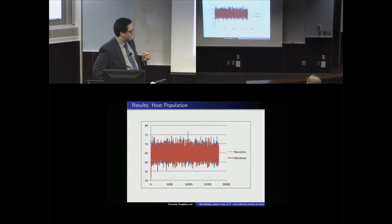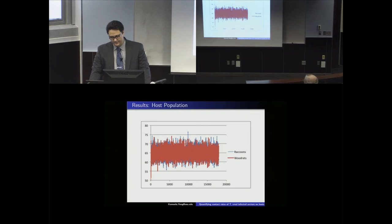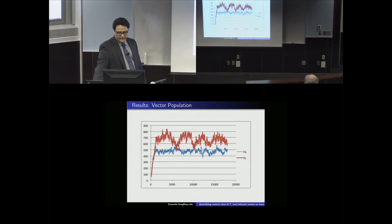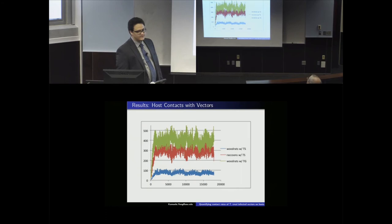I ran the model 18 times and averaged the results. This is a stochastic process so there is oscillation, but raccoons and wood rats both oscillate around 65 individuals each. Host demography is independent of the number of vectors, whereas vector populations depend on available hosts. The vector population shows more oscillation — T. sanguasuga is the red line and T. steckeri is the blue line — but both oscillate around a stable number. We then look at the contact rates: the contacts hosts have with vectors.